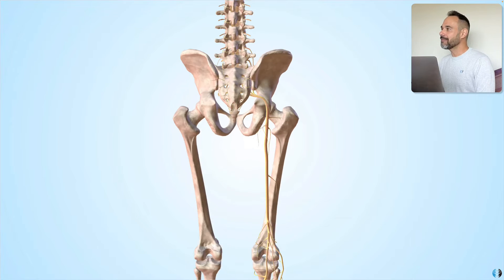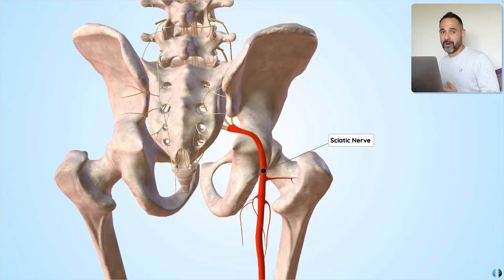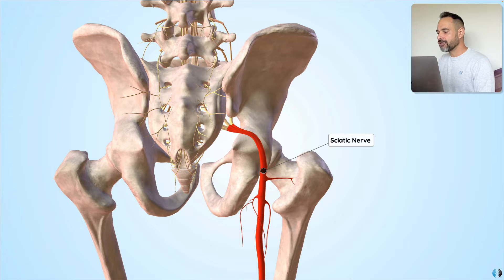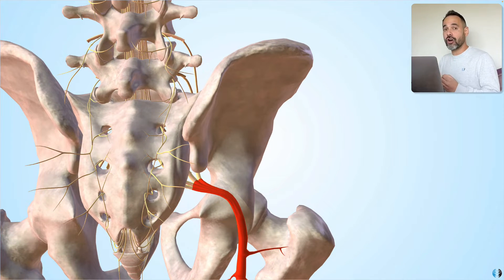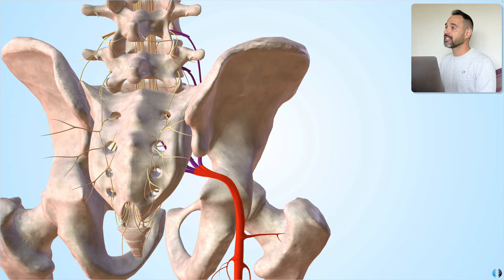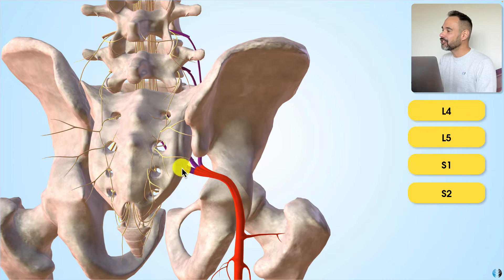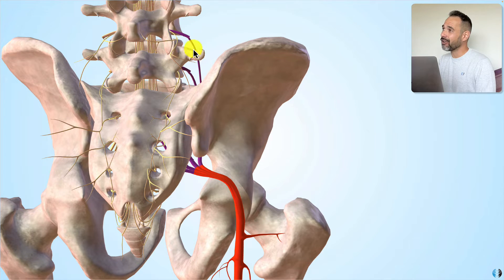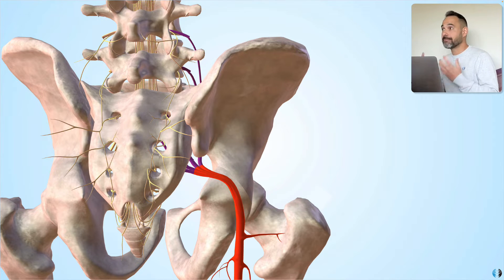The sciatic nerve is a super important nerve in the leg and one of the biggest. Therefore, it's no surprise that it has a lot of spinal innervation from different nerve roots. We know that the sciatic nerve is derived from the L4, L5, S1, S2, and S3 nerve roots. In particular, we look at L4, L5, and S1 as the most common levels that might get irritated when your patient has back pain.